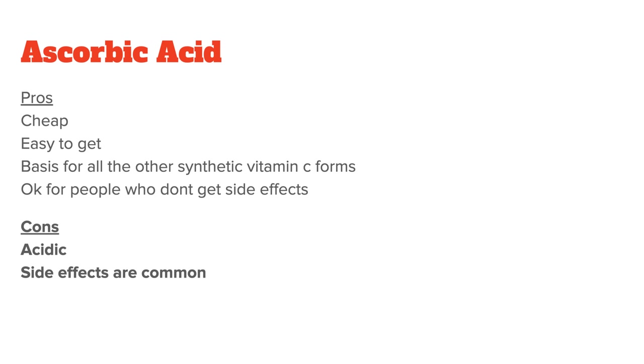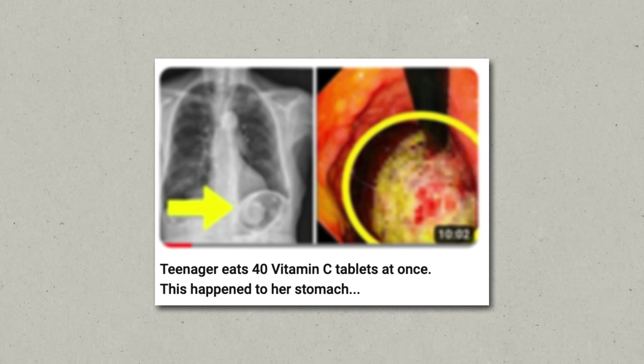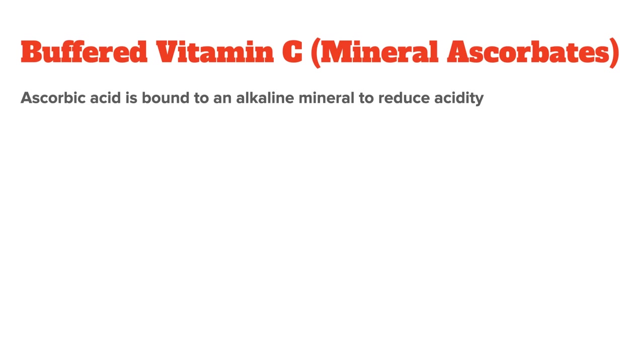Unfortunately, quite a few people do get side effects from it, which takes me to its cons. As the name suggests, it's very acidic, which means that if you take too much, you can get things like stomach upset and diarrhea. I will link a video of what happens when someone accidentally takes several thousands of milligrams of ascorbic acid at once.